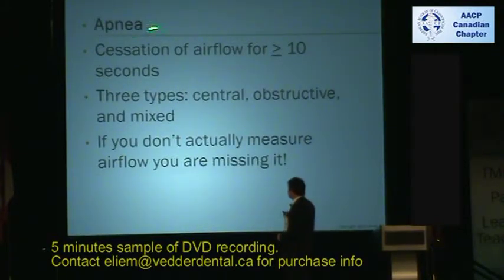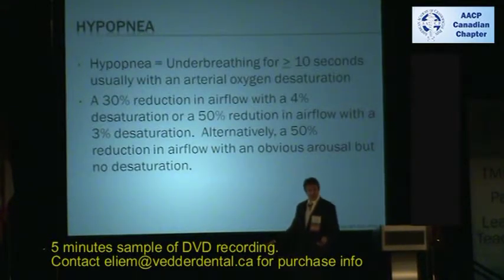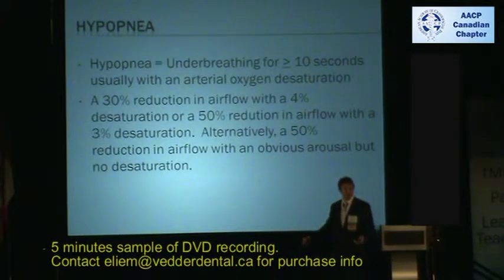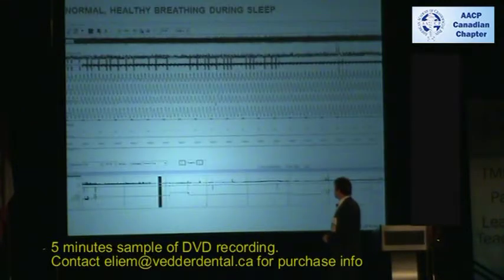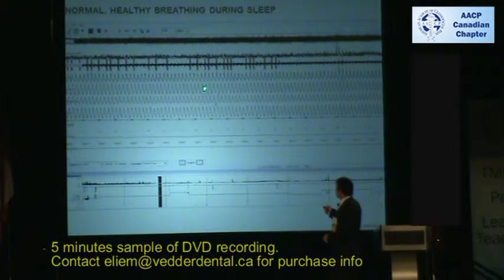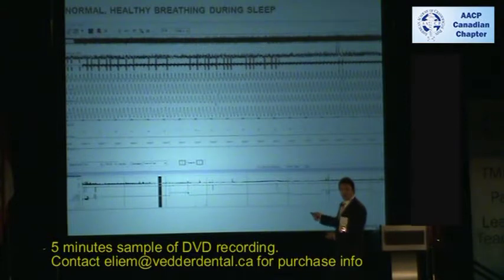We've already talked about three types of apnea — cessation of air flow. It's really key, in my opinion, that you measure air flow; otherwise you're not necessarily measuring properly, because we are talking about, after all, cessation of air flow. Hypopnea is under-breathing for 10 or more seconds. This is what you want to see as normal breathing — that's sinusoidal activity. What we're looking for are changes in the y-axis and the x-axis. When it's all perfectly sinusoidal with no real change, nothing is going on.